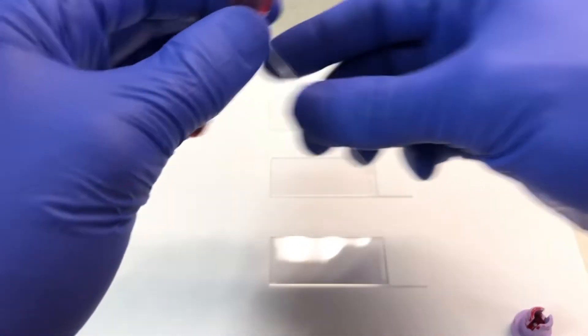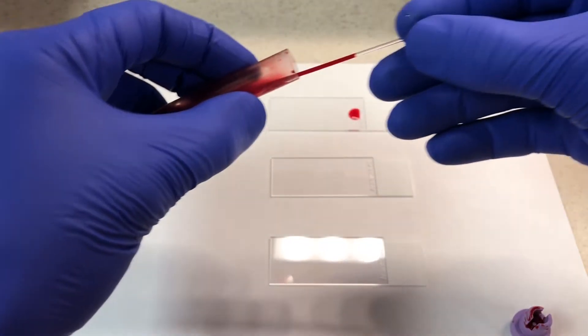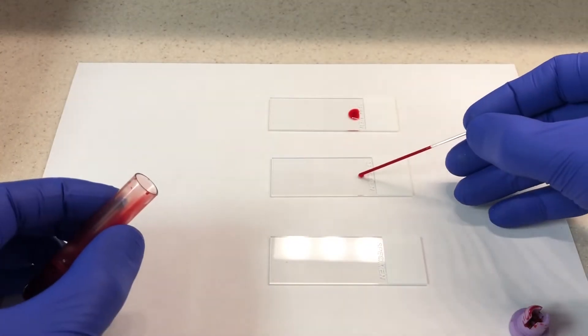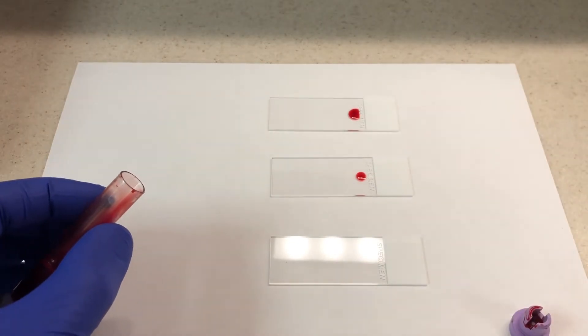Capillary tubes are also fairly common and they're quick to use. Just fill them up and dab them a little bit on the slide and you'll make a blood drop.